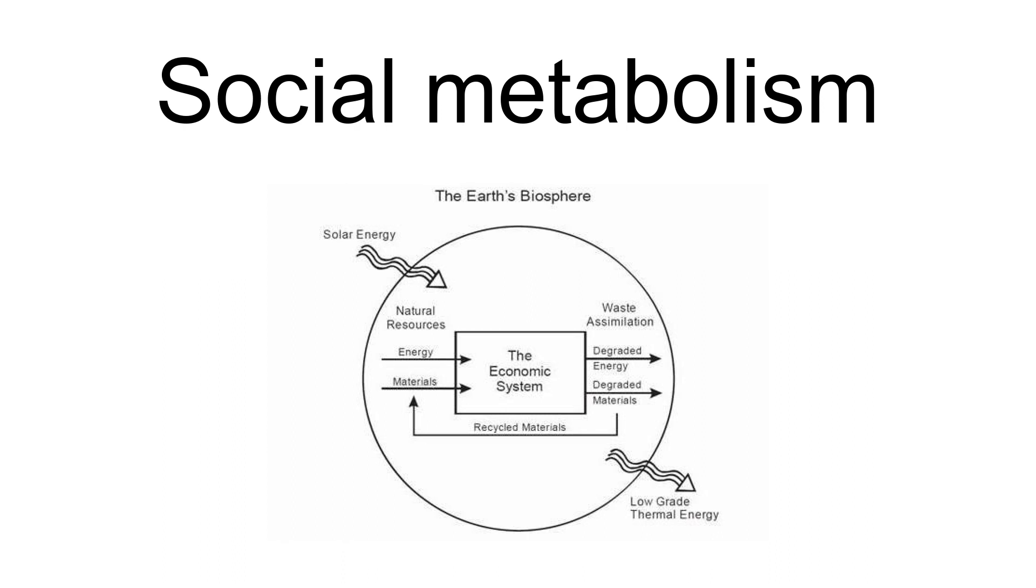In-use stocks, which comprise buildings, vehicles, appliances, infrastructure, etc., are built up and maintained by the different industrial processes that are part of social metabolism. These stocks then provide service to people in form of shelter, transportation, or communication.